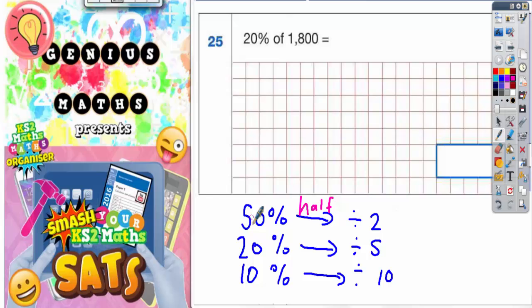If you were finding 50% of a number, you'd have to half that number. In other words, divide it by 2. And it's all because 2 lots of 50% would get you back to 100%.